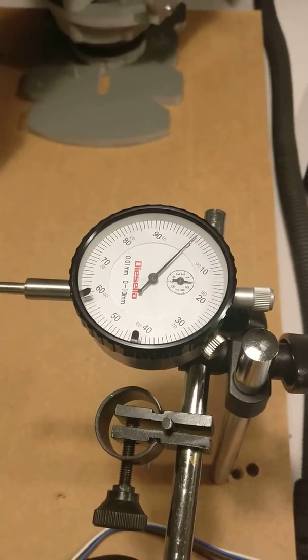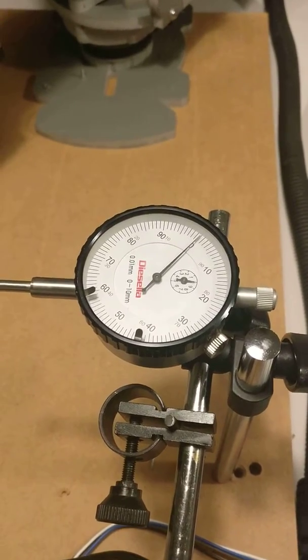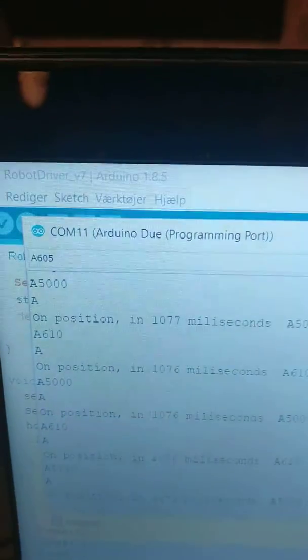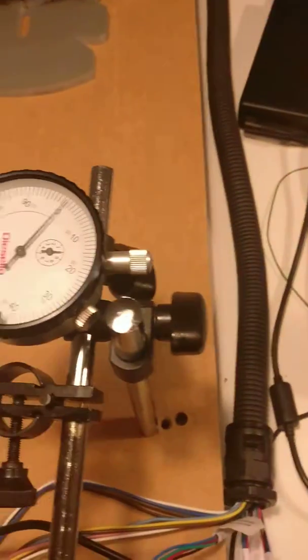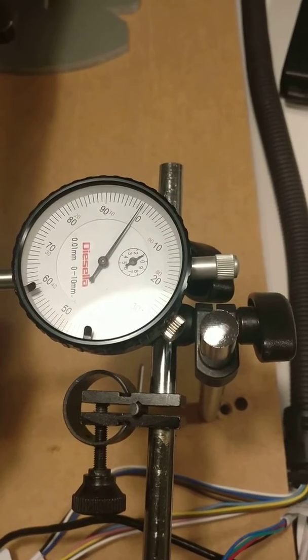I go A5000 and then I take A605. So this is A605. Let's see what's happening. Yeah, so the in between.